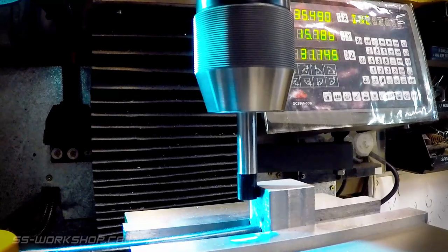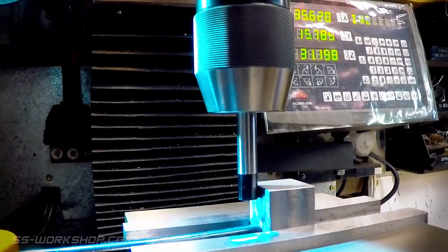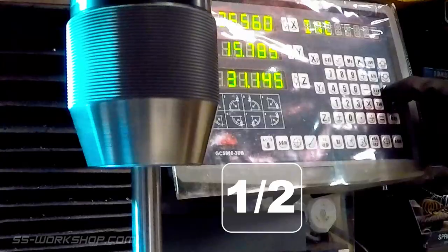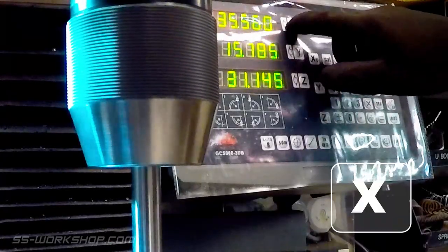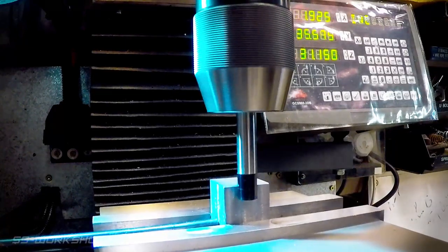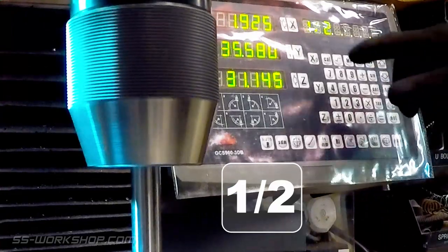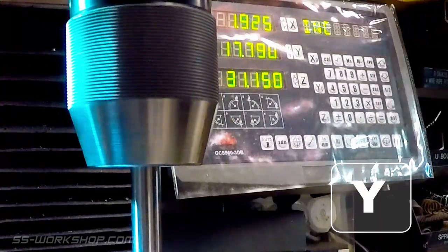I then move to the third face, once again locating its edge. I then press half on the digital readout followed by the X key. This halves the distance between the two sides and gives you a centre point. Once again I repeat this with the fourth side and the Y axis.